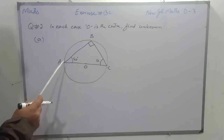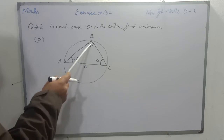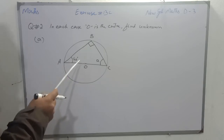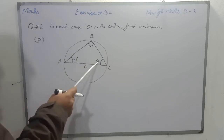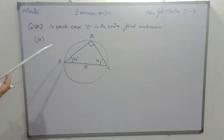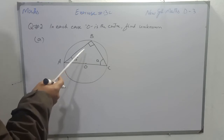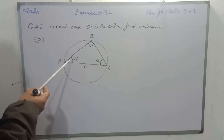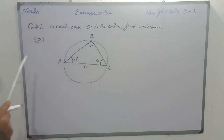So angle B is a right angle because it is on the semicircle. The straight angle AOC is 180 degrees and it is the central angle, so the circumscribed angle is half of the central angle, making angle B equal to 90 degrees. In a right angle triangle, the sum of the acute angles is equal to 90 degrees. We can also apply the formula: sum of angles in a triangle equals 180 degrees.